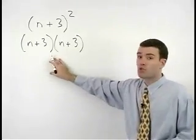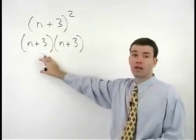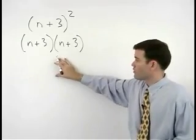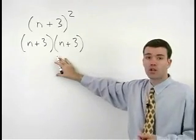So we really have two binomials that are multiplying together, and to simplify this problem we must use the FOIL method.